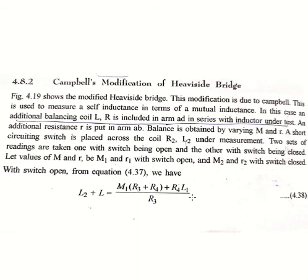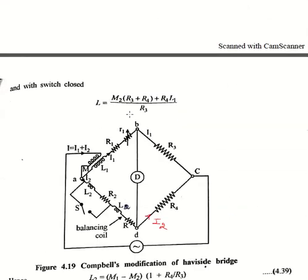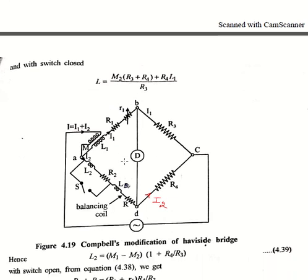This bridge is used for the measurement of self inductance in terms of mutual inductance. We have already discussed that mutual inductance can be used for measurement of self inductance, capacitance, and so on. This is a basic example or application of mutual inductance. In this case, an additional coil L and R is added in arm AD in series with the inductor which is to be determined. In addition, we have a small resistance r in the arm AB.